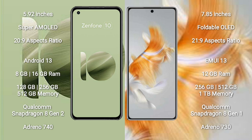The Asus Zenfone 10 runs on the Android 13 operating system, while the Huawei Mate X3 runs on EMUI 13. The Asus Zenfone 10 comes with 8GB or 16GB RAM and 128GB, 256GB, or 512GB internal storage, powered by a Qualcomm Snapdragon 8 Gen 2 processor with an Adreno 740 GPU.